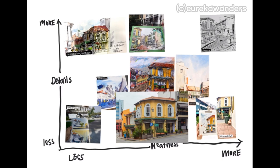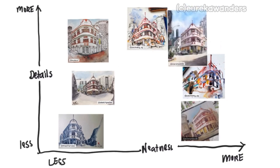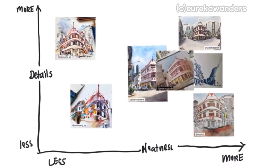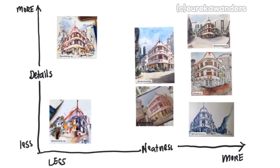Let's practice this concept in the next slide. Take the example of Keong Saik Road — the old Tong Eating House, which is this building over here. Here are all the sketches I've gathered from fellow urban sketchers. Take a few moments to look at all these sketches and try to organize them on the detail-versus-neatness graph.